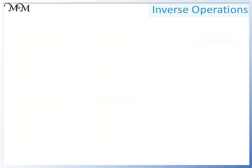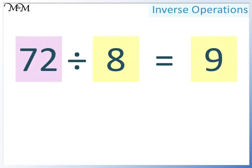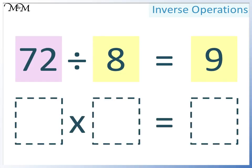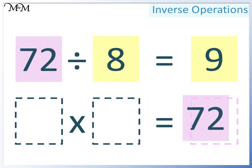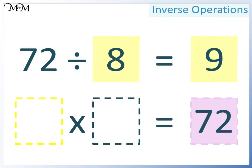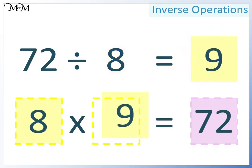Here's our final example: 72 divided by 8 equals 9. A large number divided by a smaller number equals another smaller number. We want to write this as a multiplication — two smaller numbers multiply together to make a larger number. So the largest number must go here; 72 is the largest number. Here we can have either of the two smaller numbers — this time we'll have 8. And so 9 must go here. 8 times 9 equals 72.